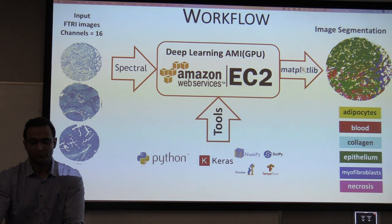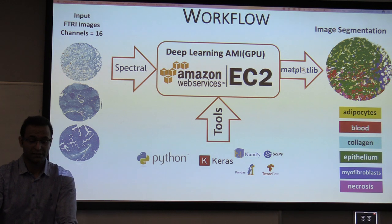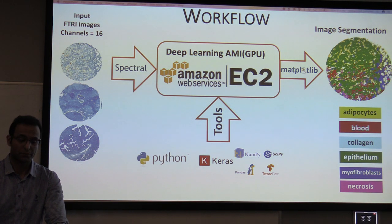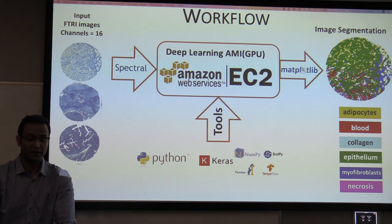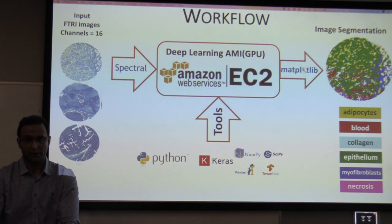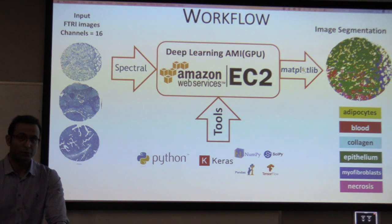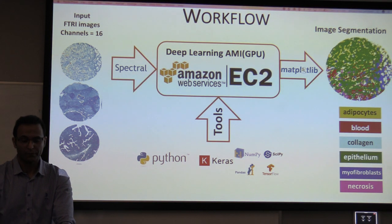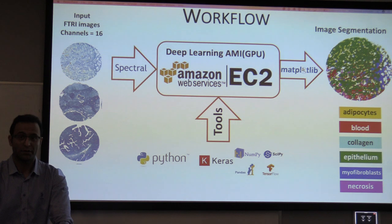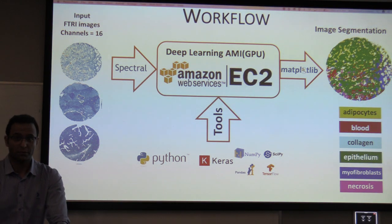Here is the workflow for the project. The input is FDR images and each image has 16 channels. The engine is a deep learning AMI machine running on a GPU instance on EC2, and I used standard Python toolkits for this project. The output is image segmentation, where each pixel represents a cellular component, and I have six major cellular components to classify.